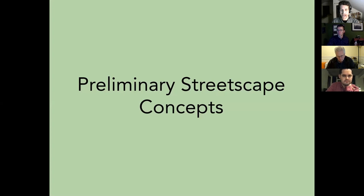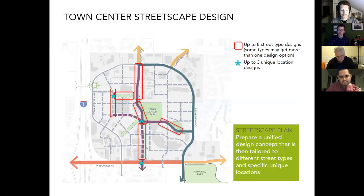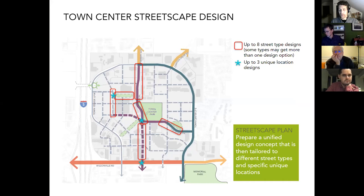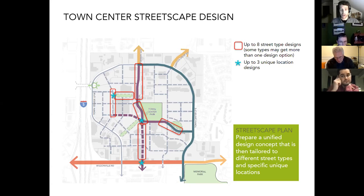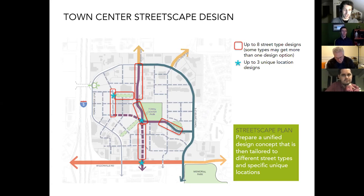So that's essentially the background. I'll show you this one slide and then hand it off to Colin. Over these next couple of months, the input you provide today is going to help us get to that recommended concept. Then we'll be applying it to up to eight street locations and potentially up to three unique location designs — those could be intersections or plazas on private sites where we want the public and the private realm to really integrate together.